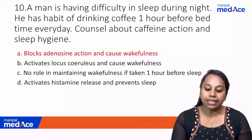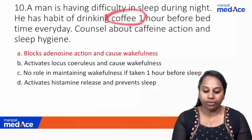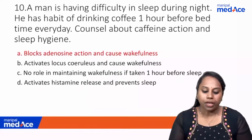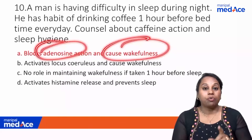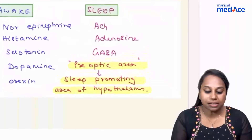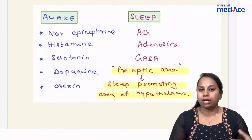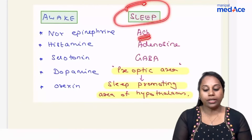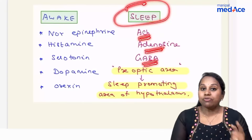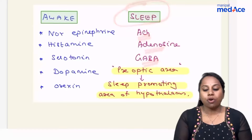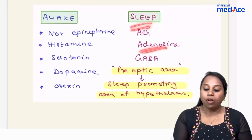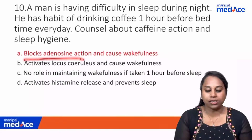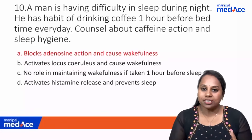Question 10: A man has difficulty sleeping and drinks coffee one hour before bed. The question is about adenosine and wakefulness. Neurotransmitters for sleep include acetylcholine, adenosine, and GABA. When adenosine levels increase in the brain, you feel sleepy. Caffeine blocks adenosine action, causing wakefulness. Answer: option A.